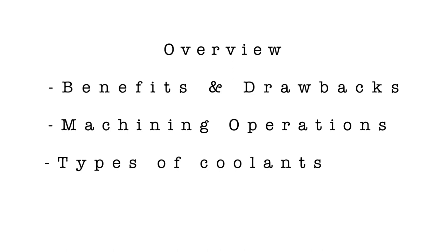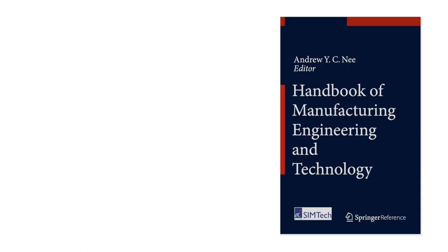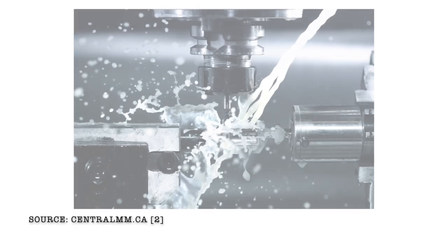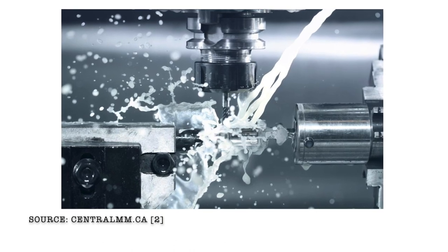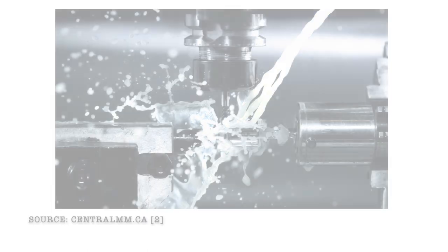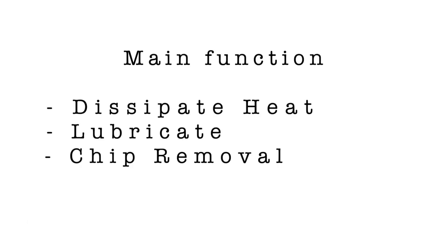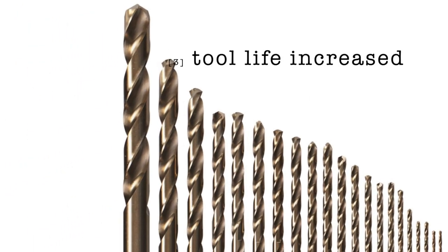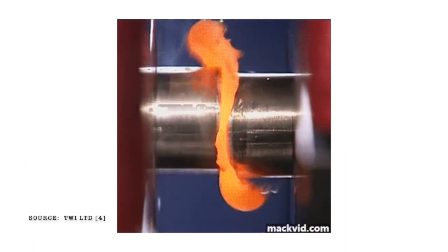We'll also discuss the main types of coolant used in the industry. This textbook by Angeney classifies coolants and lubricants as cutting fluids, which are used to reduce friction between two objects in contact during machining. On top of reducing friction, which dissipates the heat, the coolant is used to lubricate and remove chips from the workspace. This prolongs the life of the tool and prevents friction wear from occurring.